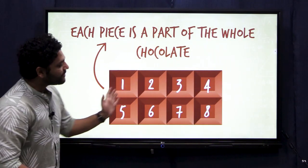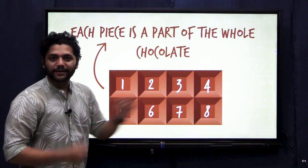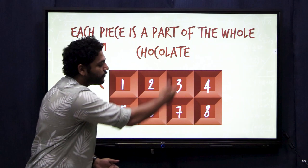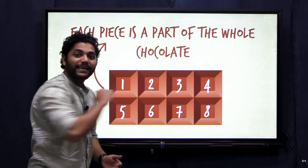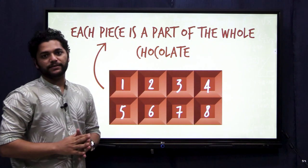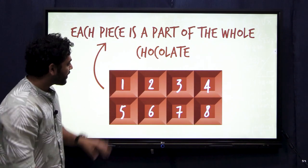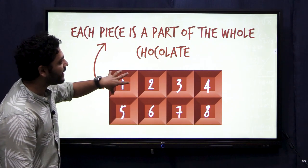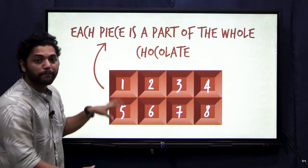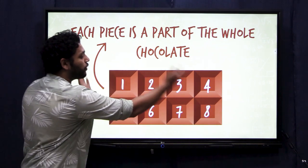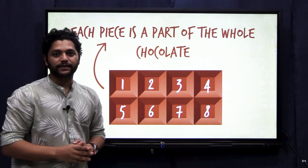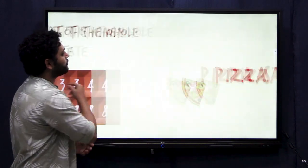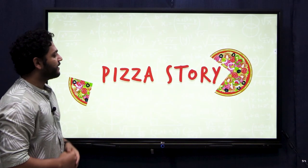Similarly, there is a chocolate bar. I divide this chocolate into eight equal parts. I can say that this one piece is a part of the whole chocolate.